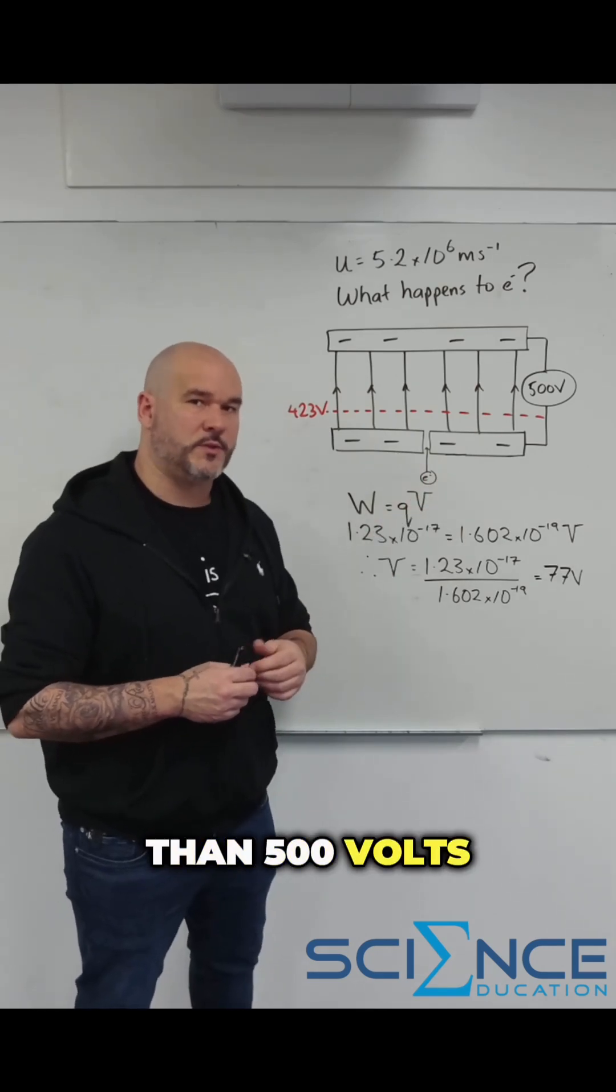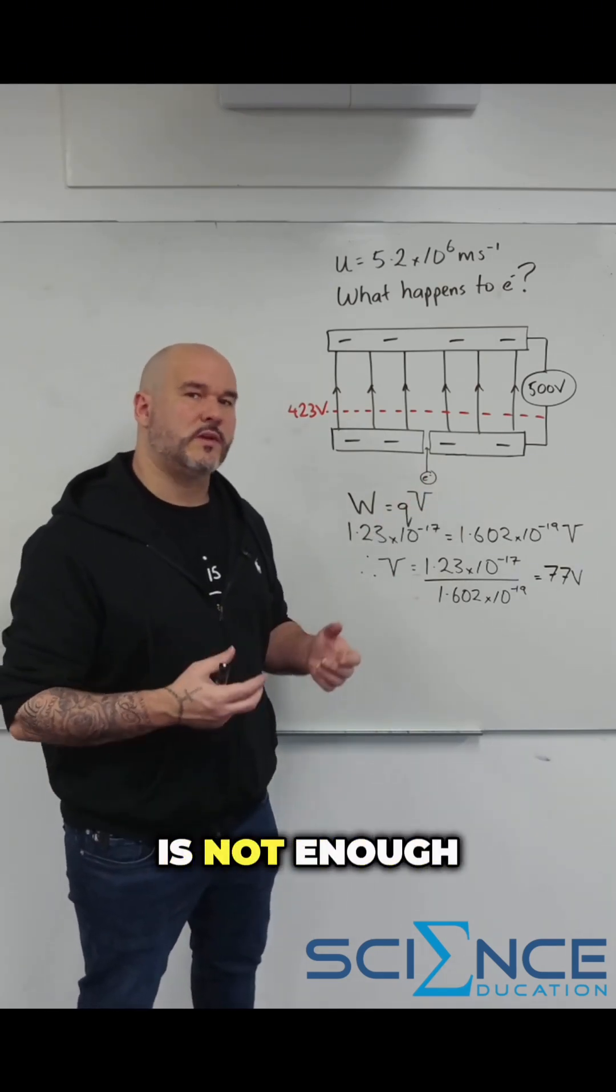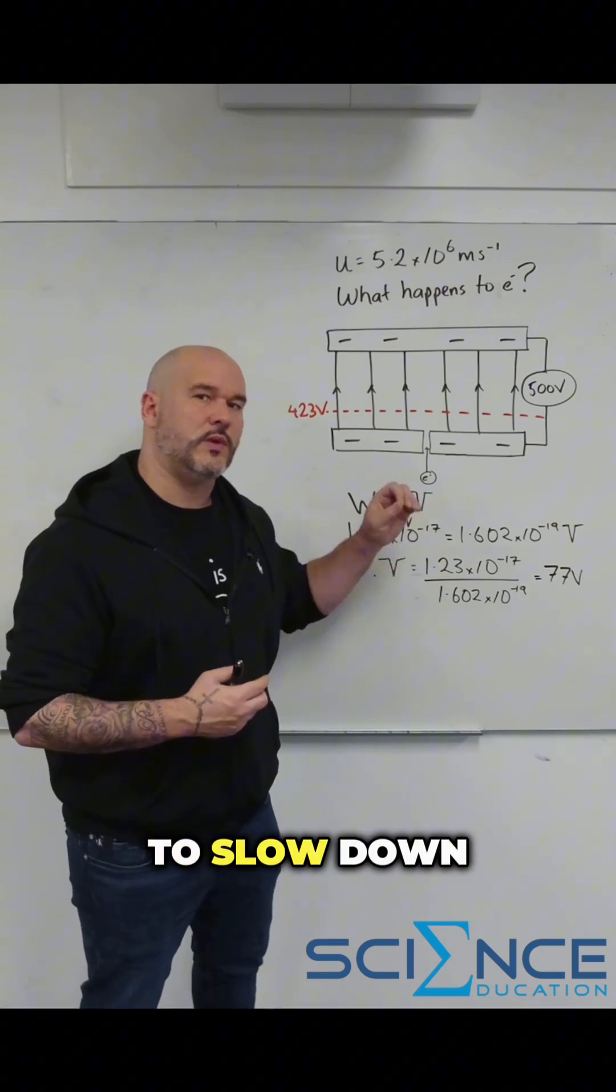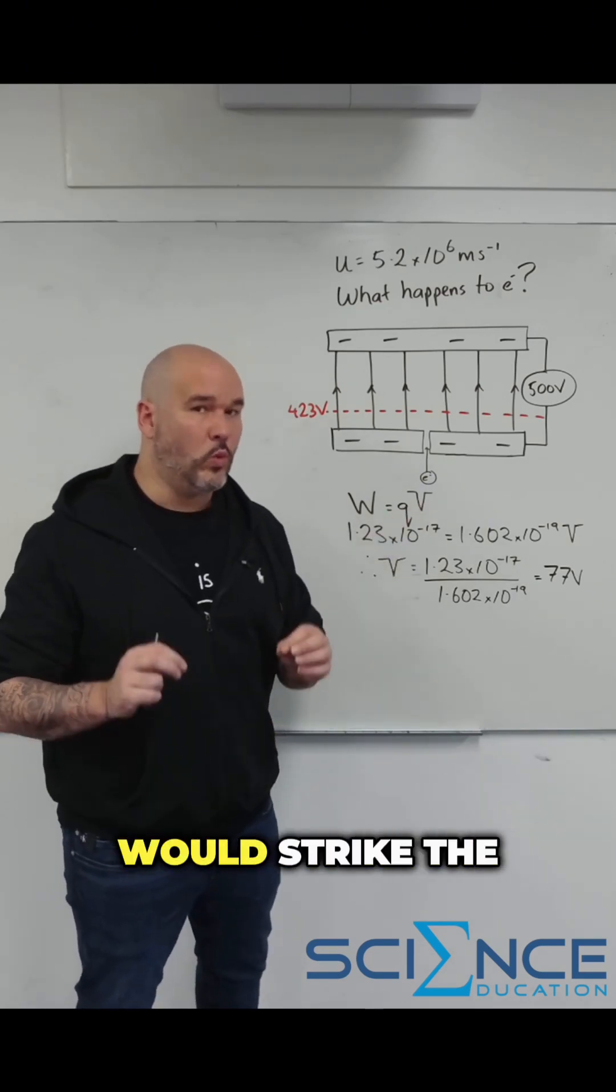So if rather than 500 volts between the plates, it was only 50 volts, that means there is not enough potential difference to slow down the electron, and the electron would strike the plate.